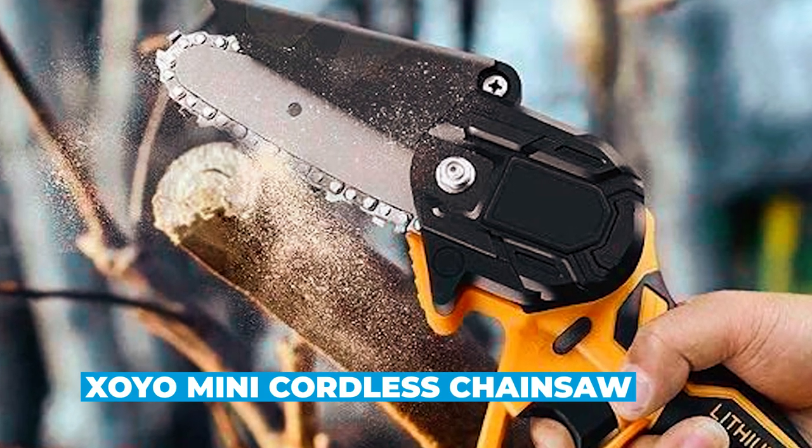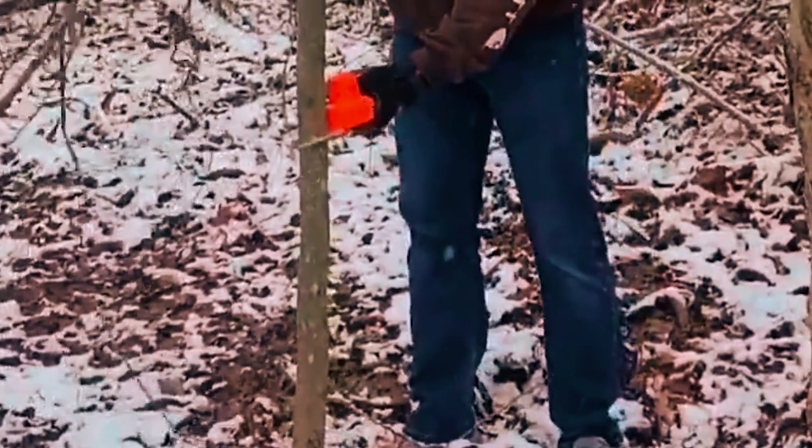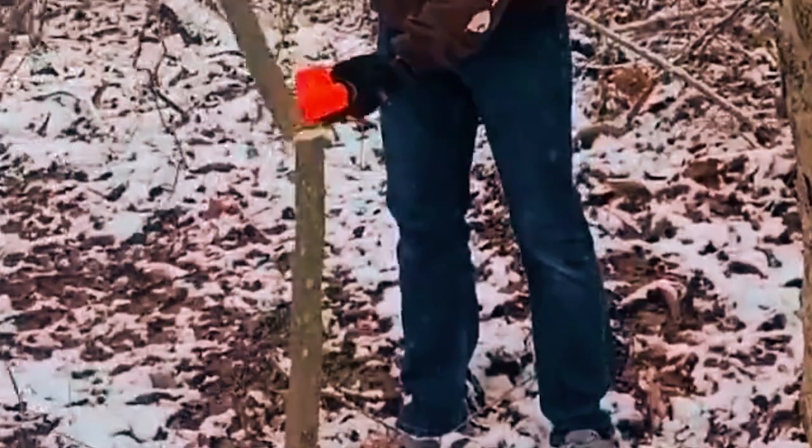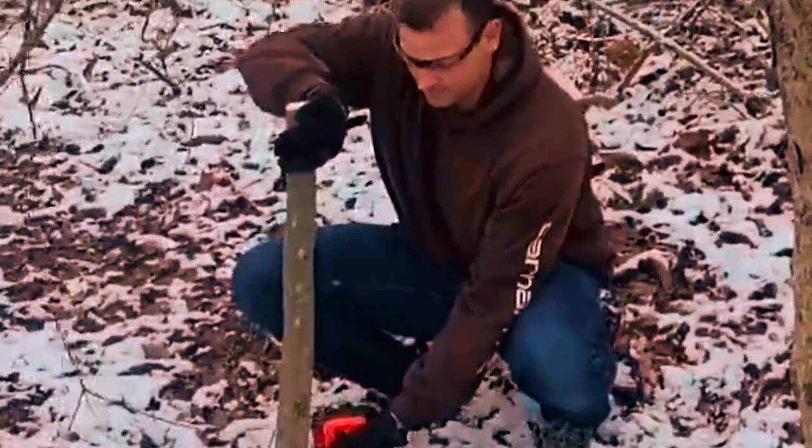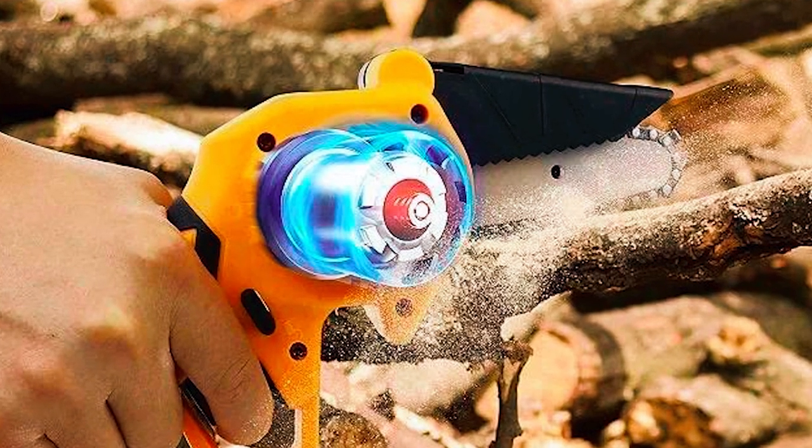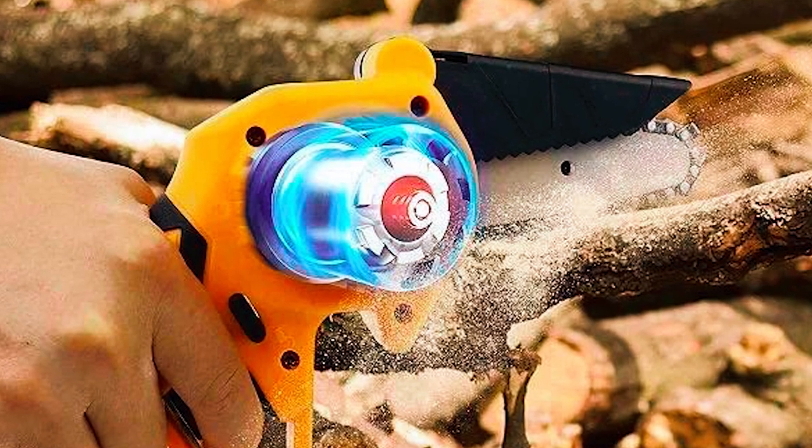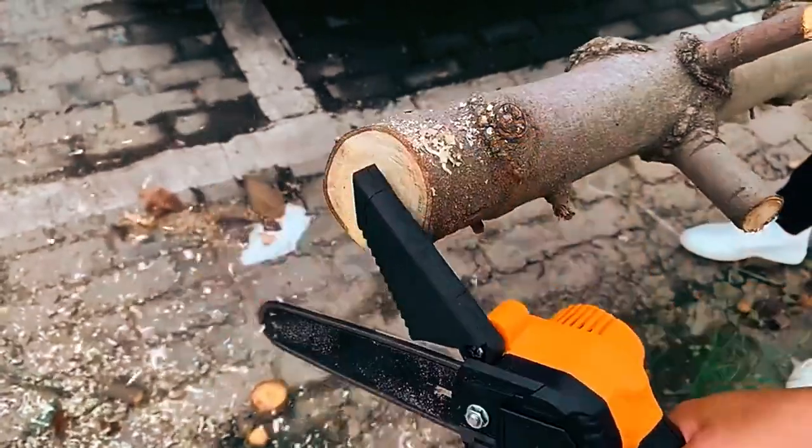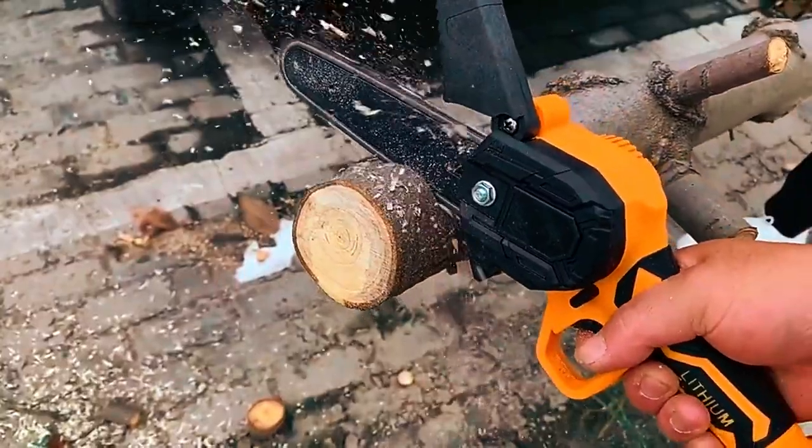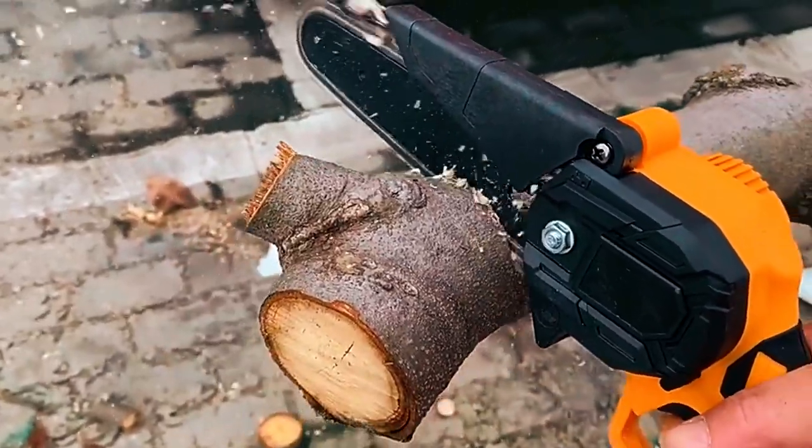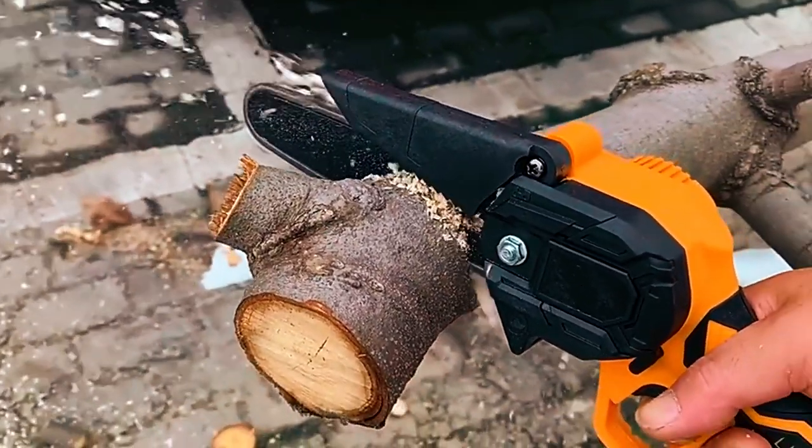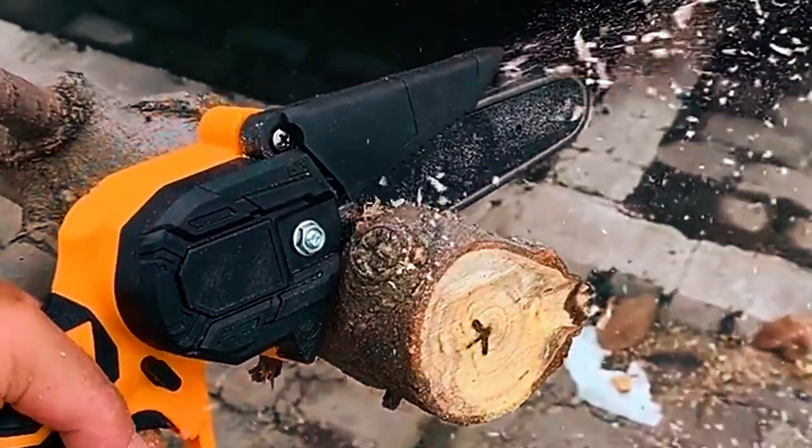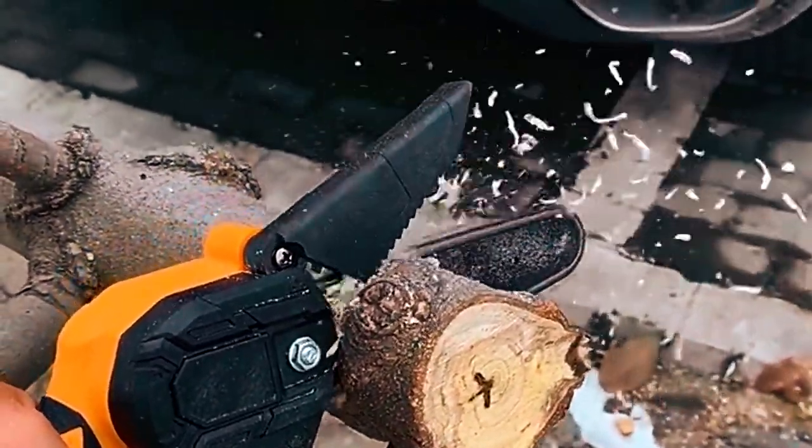Soyo Mini Cordless Chainsaw. The Soyo Mini Cordless Chainsaw is a lightweight and efficient chainsaw for your gardening and woodcutting needs. Boasting a portable handheld design and powered by double-battery technology, this chainsaw offers convenient one-handed operation, making it the perfect choice to combat fatigue during extended work sessions. It is lighter than traditional gasoline saws and faster than reciprocating saws.